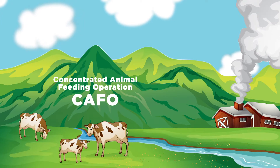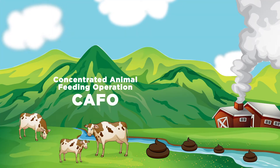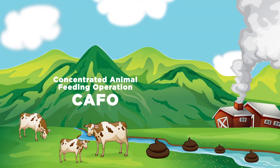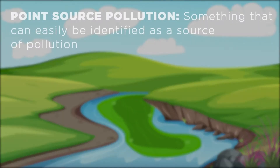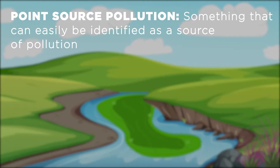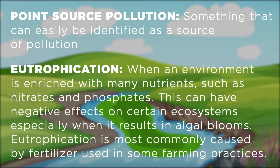These animals produce extremely large amounts of manure. Recent rainstorms must have caused much of this manure to run off into the river, causing excessive algae growth and the death of many aquatic animals. This is an example of point source pollution, something that can easily be identified as the direct source of pollution. In other words, you know that because there were rainstorms and there is a CAFO upstream, the farm must be the cause of eutrophication.